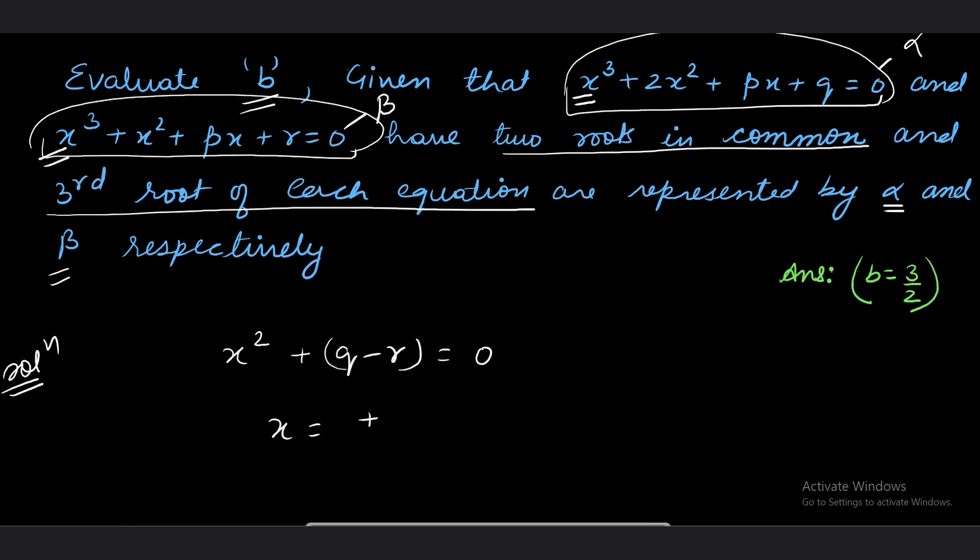So the two common roots are ±√(r - q). If I call one root gamma, the other root is minus gamma. So the two roots are additive inverses of each other, and they are common roots of the two equations. With this help, we can identify the third roots of the equations.